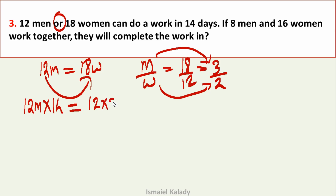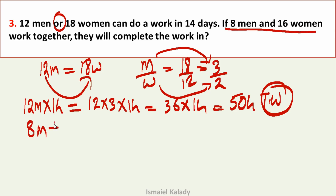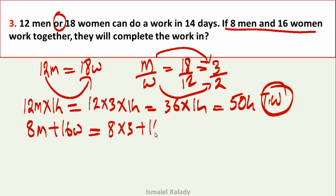Total work = 12 × 3 × 14 = 504. For 8 men and 16 women: efficiency = 8 × 3 plus 16 × 2 = 24 plus 32 = 56. Total work divided by combined efficiency gives the number of days.